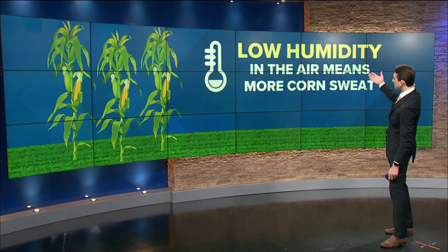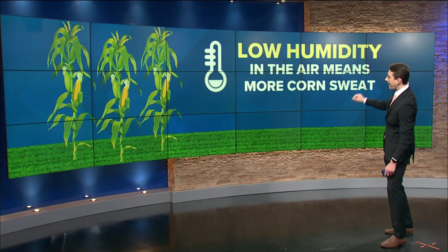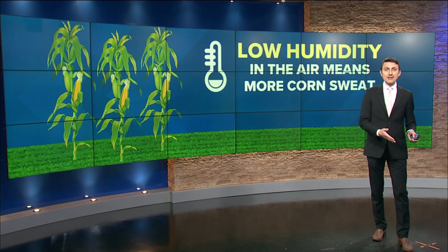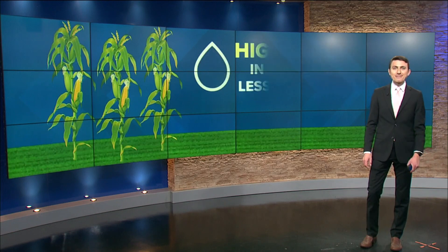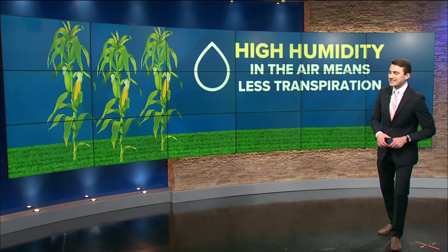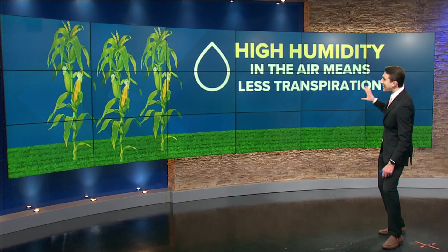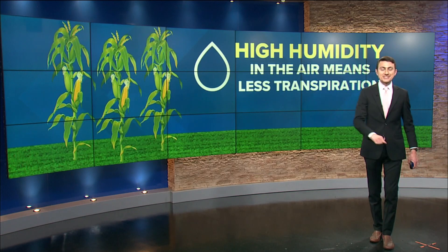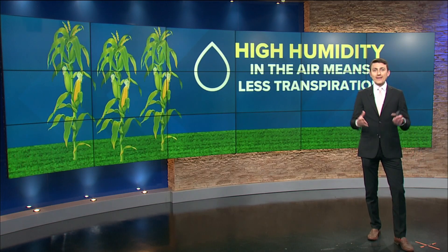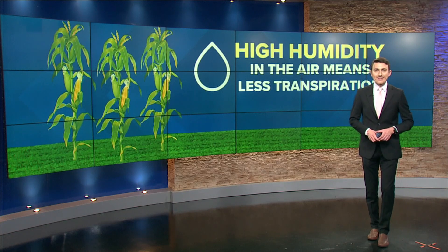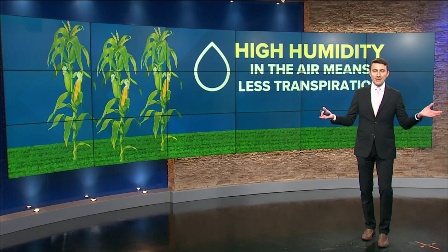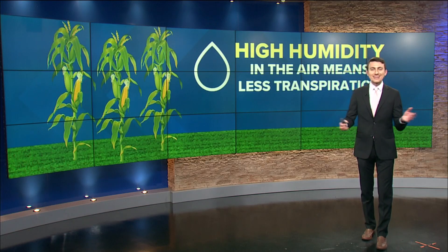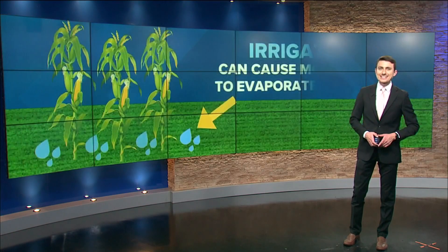Humidity levels also play a role. Low humidity in the air means more corn sweat. In other words, if the air is dry, that corn is going to make it a little bit muggier. And vice versa — if we have a muggy, humid air mass in place, high humidity means less transpiration, because the air is already more saturated. Think about it in terms of relative humidity: if that humidity level is 80, 90, or even 100%, there's just nowhere for that moisture to go, so the corn really is not able to release any excess moisture.